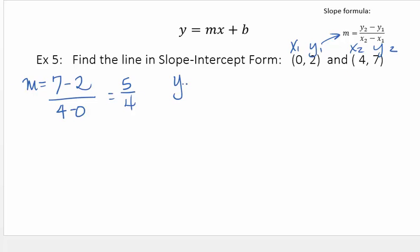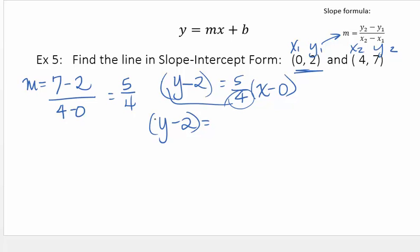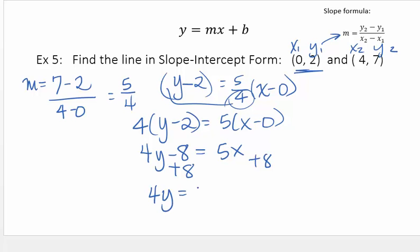So if I use y minus, if I'm using that first point, minus 2, equals 5 fourths x minus 0. And then I'm going to clean it up, distribute out any coefficients. But I'm going to move that 4 over. Remember how we talked about getting rid of the fraction? So distribute out the 4. So 4y minus 8 equals 5x plus 0. It doesn't really matter. Now I'm solving for y. Divide by 4.